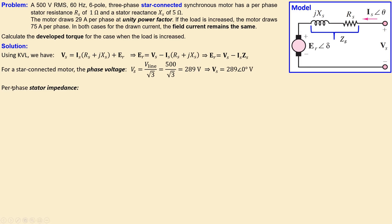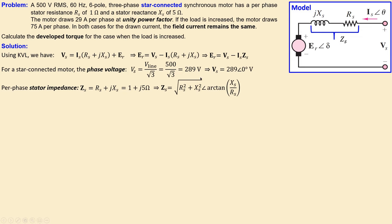Next, we calculate the stator impedance per phase. It is the series combination of stator resistance and stator reactance: one plus j5 ohms in rectangular form. Converting to polar form, the magnitude is √(1² + 5²) and the argument is arctan(5/1), which gives 5.1 ohms at approximately 79 degrees.